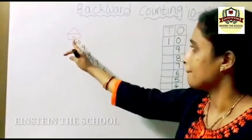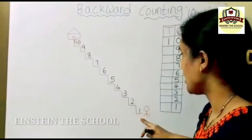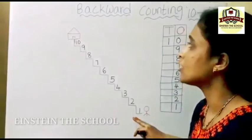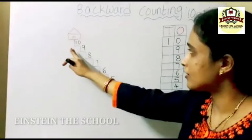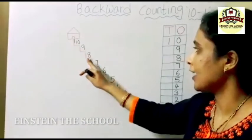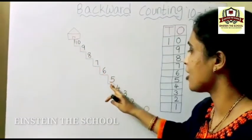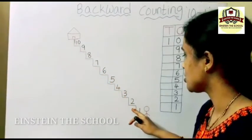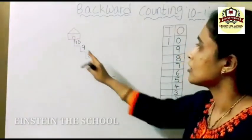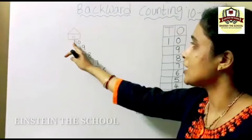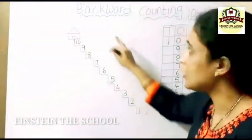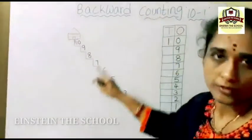Counting from a bigger number to a smaller number is called backward counting or reverse counting. Okay children, that is from big number: 10, 9, 8, 7, 6, 5, 4, 3, 2, 1. This process of counting the numbers from big number to small number is called backward counting. Understood?